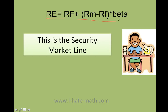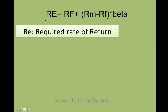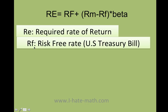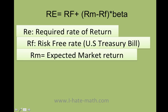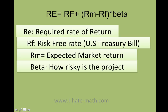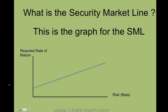Here is the formula to find the required rate of return. You have RE, which is the required rate of return, equals RF — the risk-free rate. This is the rate you get from the US Treasury bill, which comes from the government and is supposed to have no risk. You also have the expected market return and beta. Beta determines how risky the project is — the higher the beta, the more risk you have.